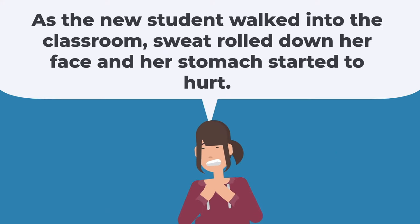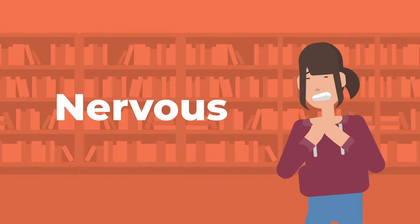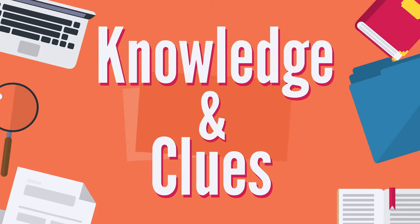Now it's time to make an inference. What do we think is happening? Based on the fact that she's new, sweating and has a stomach ache, we can infer that the new student is nervous. I believe that this is the best idea based on the clues we see and what we already know.